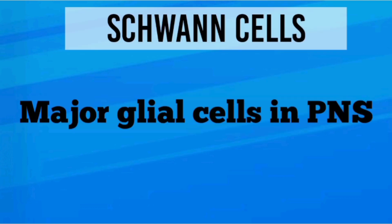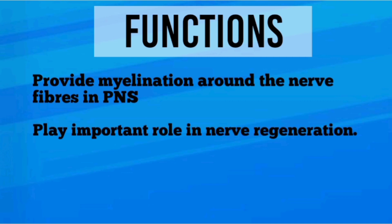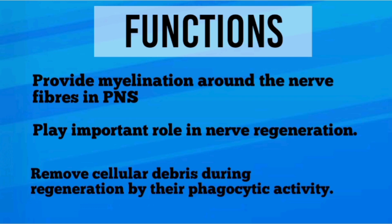Peripheral neuroglial cells: Schwann cells are the major glial cells in the peripheral nervous system. They provide myelination around the nerve fibers in the PNS, play an important role in nerve regeneration, and remove cellular debris during regeneration by their phagocytic activity.